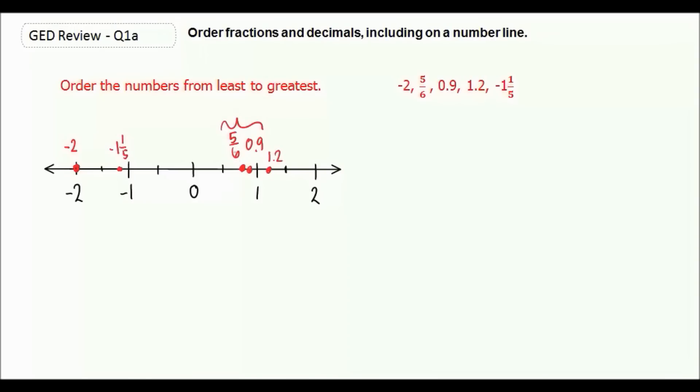So now we need to determine between 5/6 and 0.9 which one comes first. To do that, it might be best to change 5/6 into a decimal. So we say 5 divided by 6, we can't do that, so we put decimal 0, put our decimal right at the top.